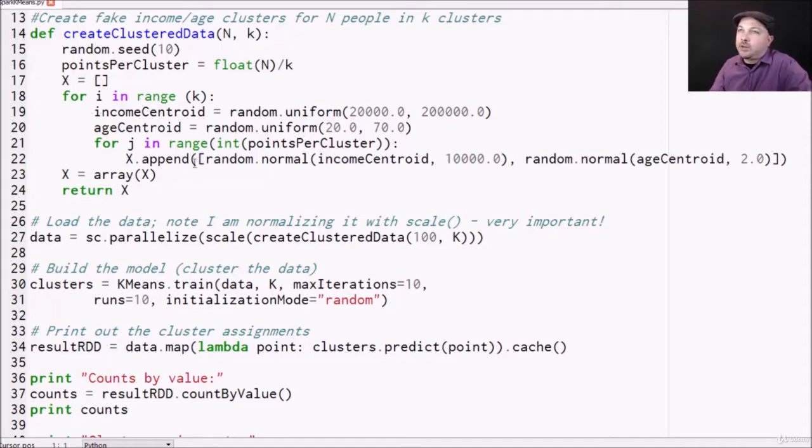Basically, what we're going to do is create a bunch of random centroids around which we normally distribute some age and income data. So what we're doing is trying to cluster people based on their age and income, and we're fabricating some data points to do that.